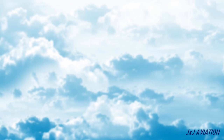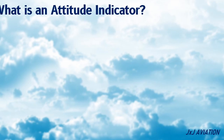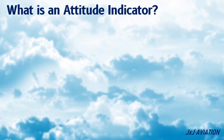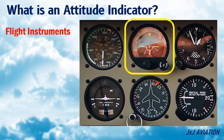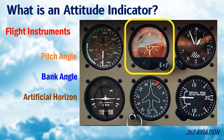What is an attitude indicator? An attitude indicator is one of the most important flight instruments. This indicator gives an aircraft's pitch and bank angles against the artificial horizon.